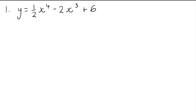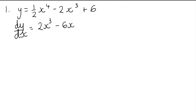Question 1: Find the x-coordinates of the stationary points on the curve with equation y equals a half x to the 4, take away 2x cubed plus 6. To find stationary points we differentiate and put it equal to 0. Multiply the half by 4 to get 2, lower the power by 1 to get 2x cubed. Now 2 times 3 is 6, keep the minus and lower the power by 1. When we differentiate 6, that goes to 0.